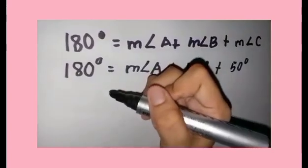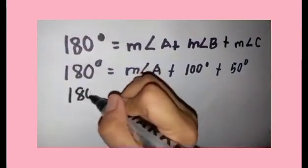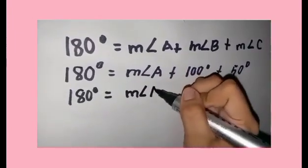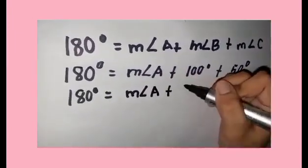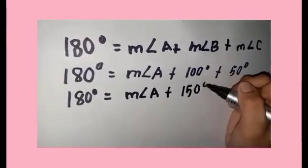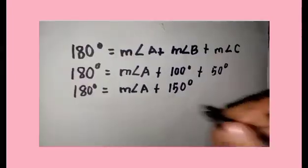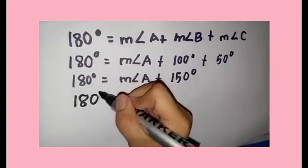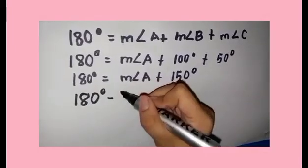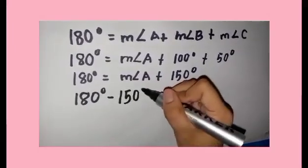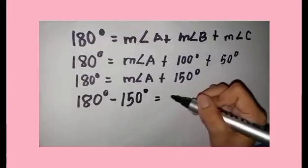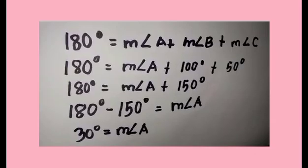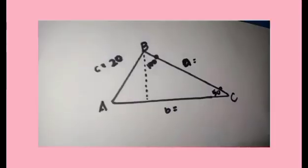In here, we're gonna add the two numbers. We have to transpose the number to the other side for us to have the right answer. And there you have it, 30 degrees for angle A.